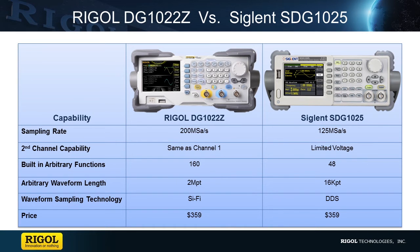For the same price as Siglent's waveform generator, Regal provides a better sampling rate, improved frequency stability, as well as higher frequency ramp, noise, pulse, and arbitrary waveforms. On top of all this, our waveform generator adds more arbitrary built-in functions and improved waveform sampling technology with SCI-5 technology.